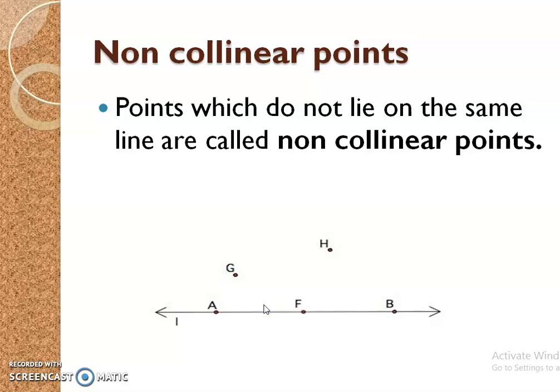Non-collinear points: The points which do not lie on the same line are called non-collinear points. See line L. Point A, point F and point B are collinear points, and point G and point H are non-collinear points. As they do not lie on line L, we can say that point G and point H are non-collinear points.